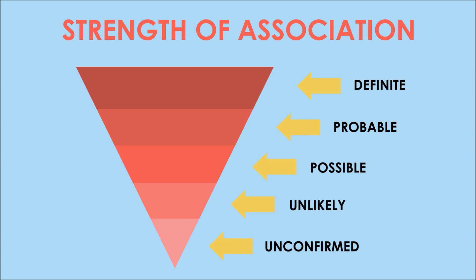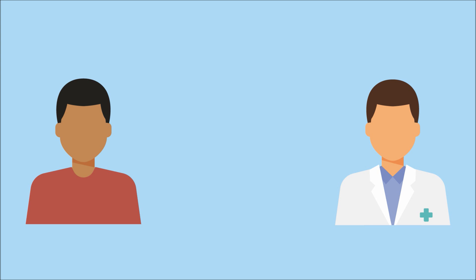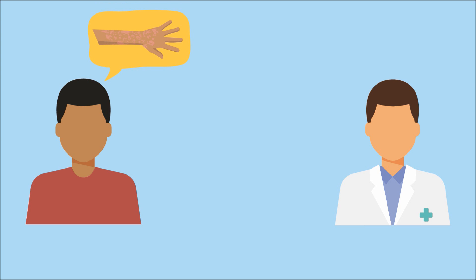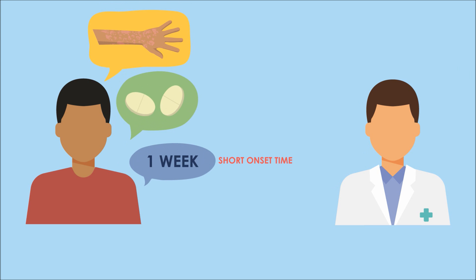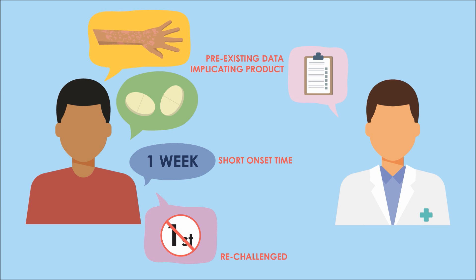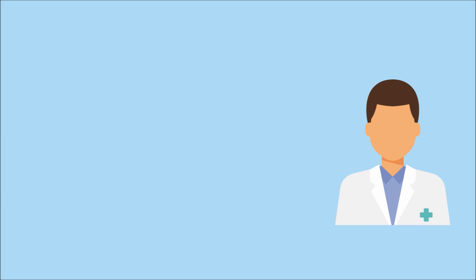Let's look at some scenarios to illustrate this. A patient comes to you with recurring maculopapular rash. He developed the rash a week after taking allopurinol for his gout flare. He had previously taken allopurinol a few months back and experienced a similar reaction — this indicates a positive re-challenge. Furthermore, allopurinol is known to cause reactions like this. Hence, this may be considered a definite causality.